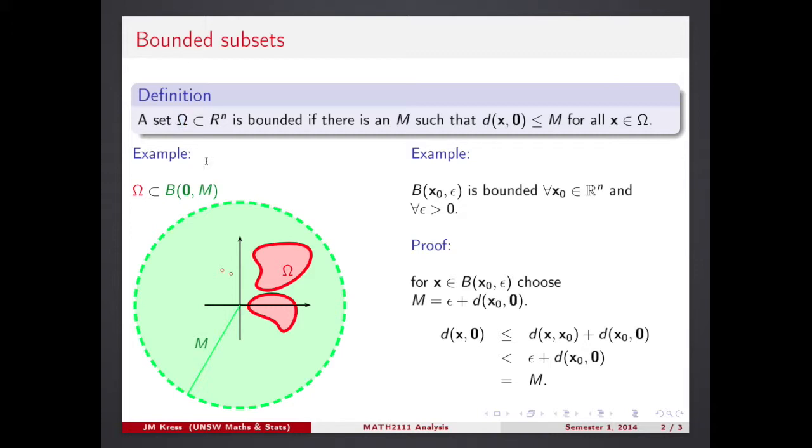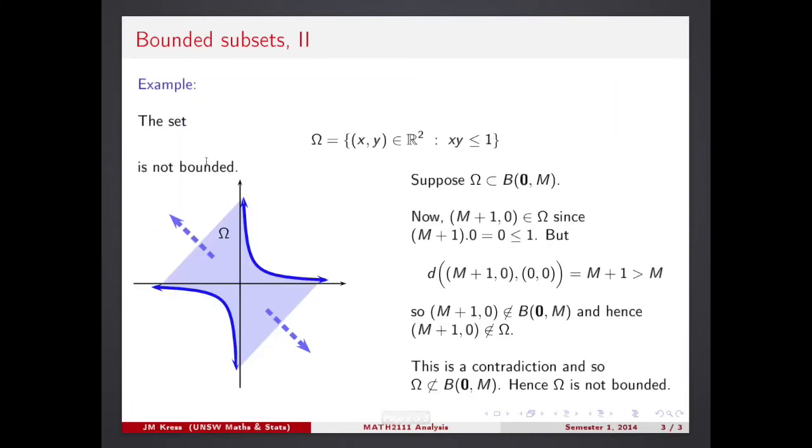Probably it's too much already for this relatively simple example. That's another example of Jonathan Kress. It's a set which is unbounded. Again, from our experience with these sort of sets, it seems like a quite natural thing.